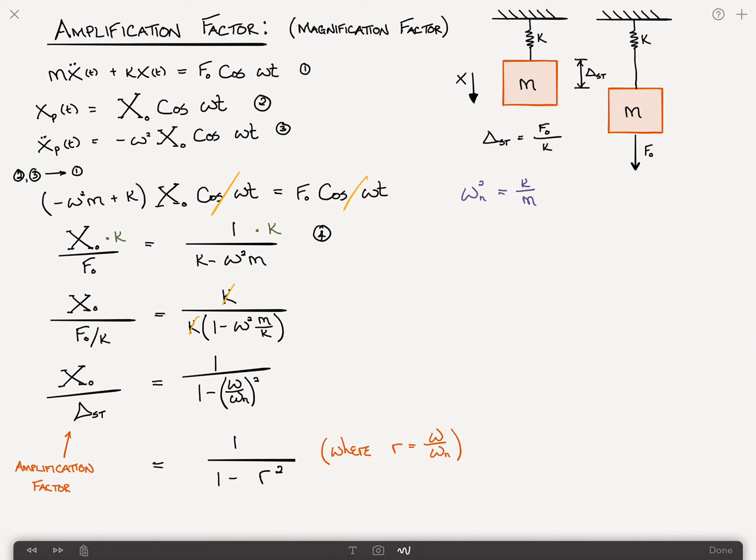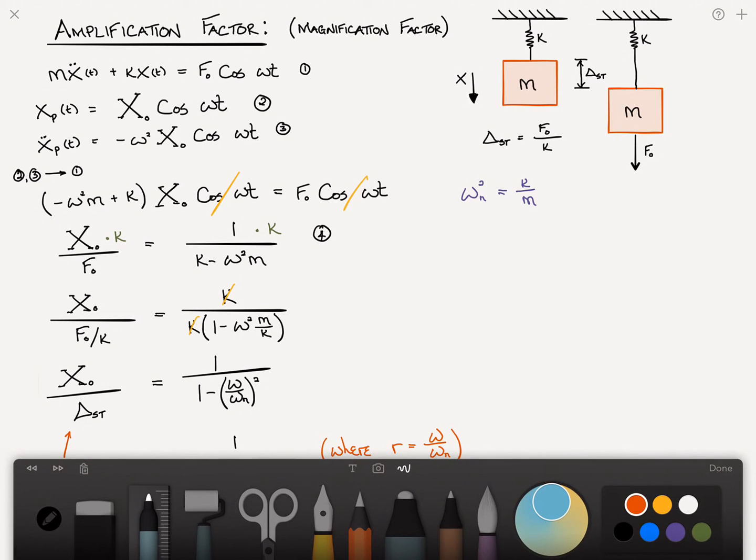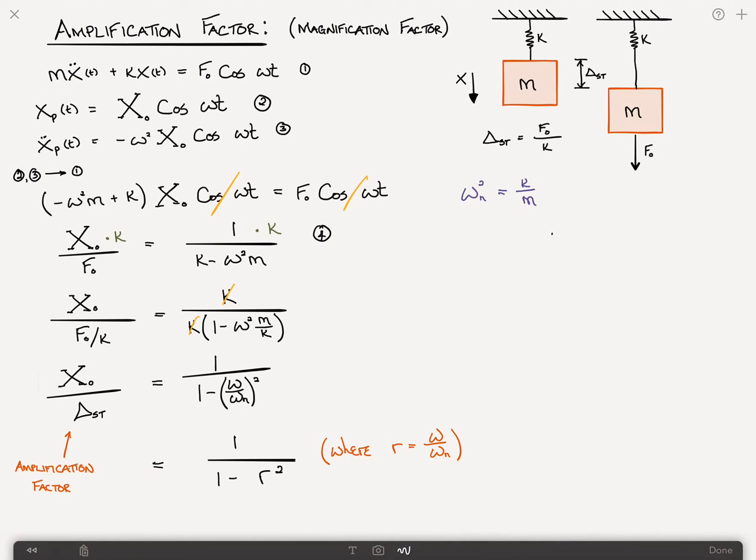And let me try to graph this for you. I think that will shed some light. This axis here is x sub 0 divided by delta st. And this axis is r, which is equal to omega divided by omega n.